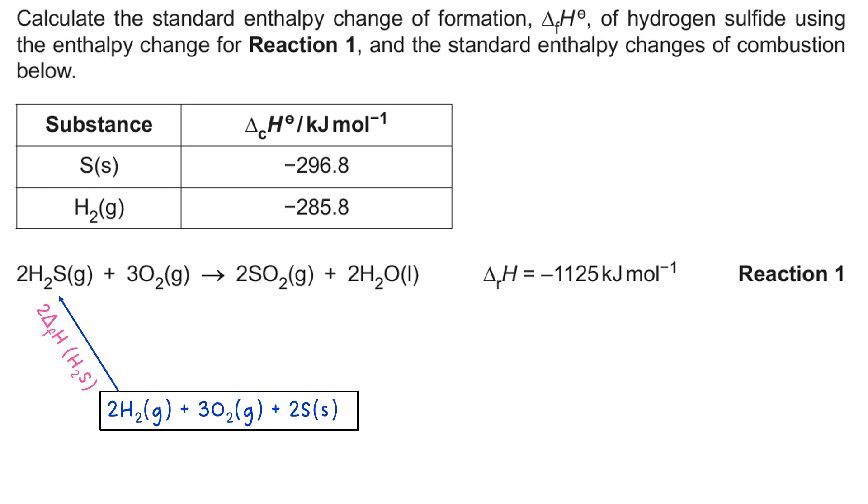In a Hess's Law cycle, if you're given ΔcH, normally what would happen is you'd point the arrows downwards and in the box here you'd have the oxides like H2O, like SO2, for example. So why is it the other way around? Well, if you look carefully, you can see that the other compounds in the reaction, the products, are also combustion products.